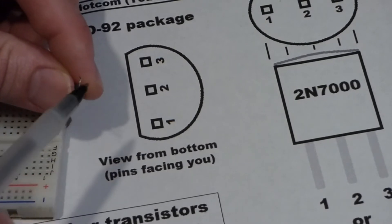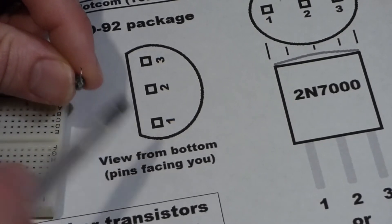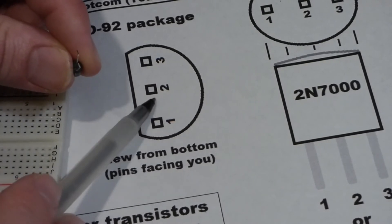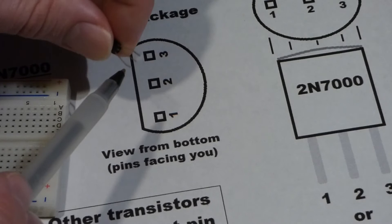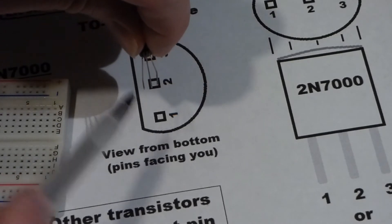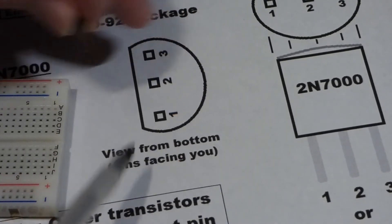So now we got pin one on the bottom, pin two in the middle, and pin three on top. So this is correct. So pin one's here. If we turn the flat edge towards you, now it's on the left, which it is here.